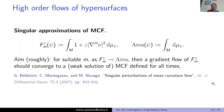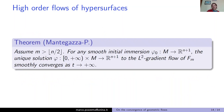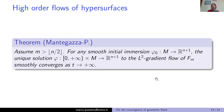This led us to the following theorem, which states the smooth convergence of those flows. Assuming m satisfies the optimal threshold m > [n/2], for any smooth initial immersion φ₀, the unique solution given by the previous theorem to the L² gradient flow smoothly converges as t → +∞. This includes the elastic flow of curves in codimension 1.